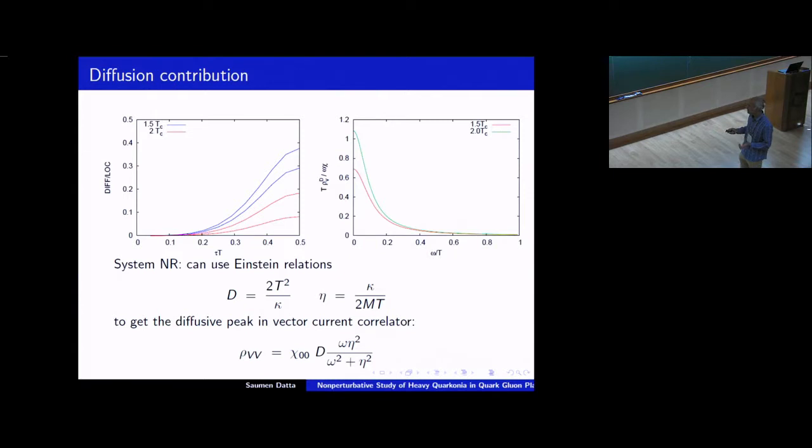So that's why one can extract this object with reasonable confidence. So the situation is very different, for example, in the original bottomonium correlator, that the diffusion contribution is pretty small to the final correlator.